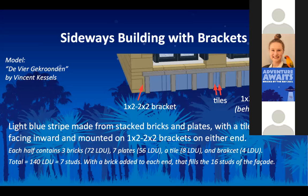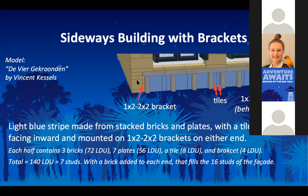If you want to do the math, each half has a plate, three more plates, two more plates, and two more plates — so seven plates and a tile on each side. The thickness of the bracket makes up the difference because you have an odd number of plates. That odd number of plates plus the half bracket gives you the eight studs that the overall dimension of this half of the building is.